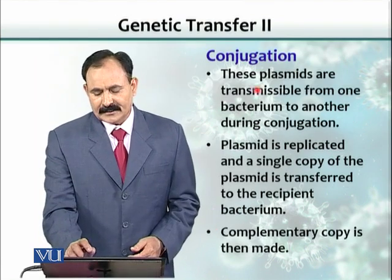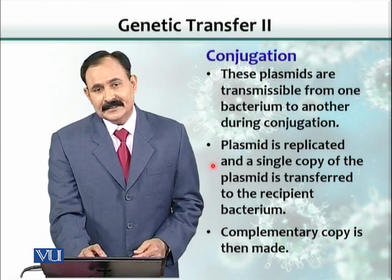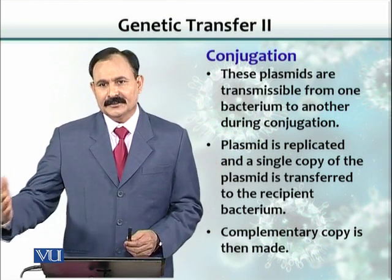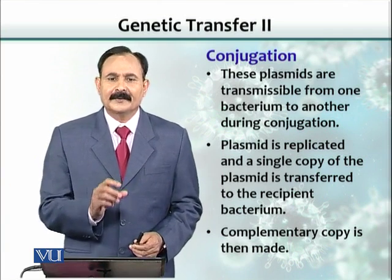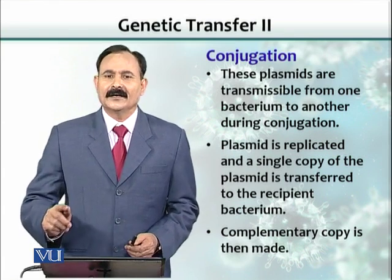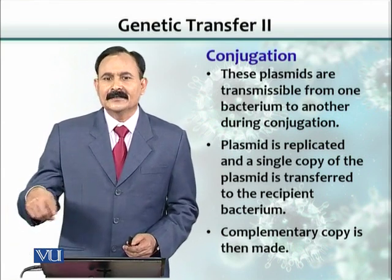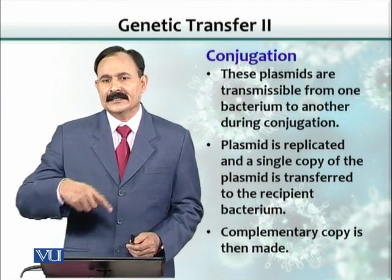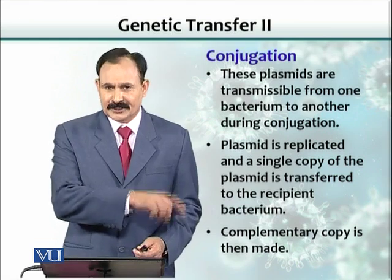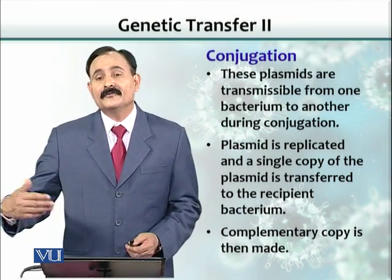These plasmids are transmissible from one bacterium to another during conjugation. What happens is that the plasmid is replicated. The F-plus donor cell replicates its plasmid and sends one copy to the other cell through the sex pilus. That copy, using itself as a template, is then duplicated — so a complementary copy is synthesized both in the original F-positive cell and in the F-negative cell, which now becomes F-positive as well.